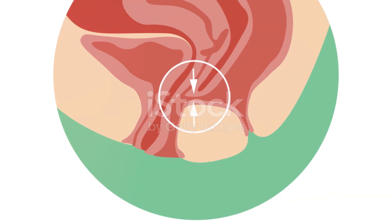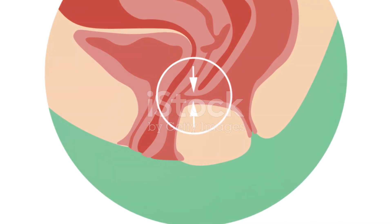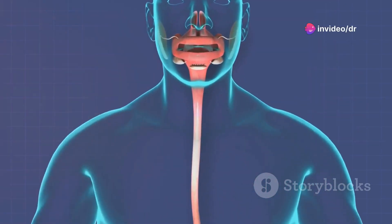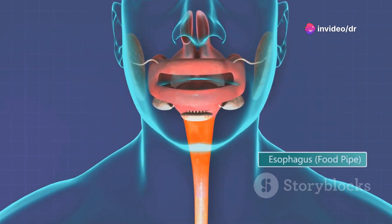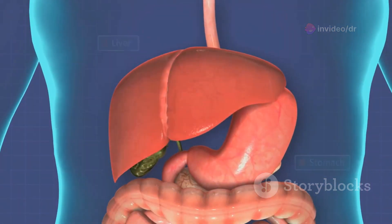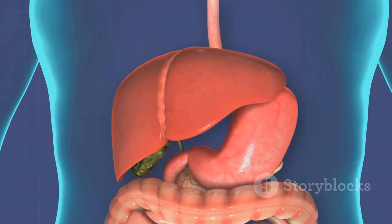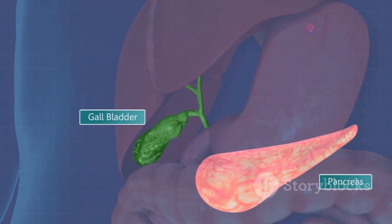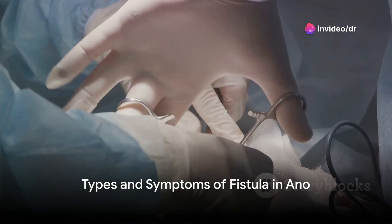Fistula in ano, in layman's terms, is a small channel that forms between the surface of the skin around the anal area and the anus itself. This typically stems from an infection in an anal gland that gives rise to an abscess. The bursting of this abscess leads to the formation of a pathway or a fistula.